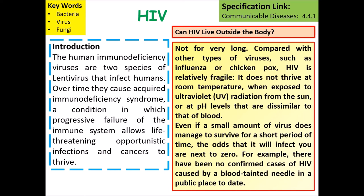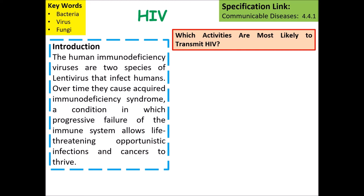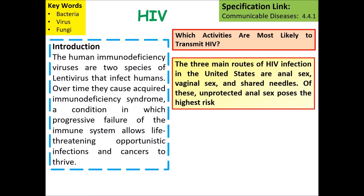Can HIV live outside the body? Not for very long. Compared with other types of viruses, HIV is relatively fragile and can be broken down by exposure to ultraviolet radiation from the sun, changes in pH levels, and an entire range of different things. Which activities are most likely to transmit HIV? The three main routes of HIV infection are anal sex, vaginal sex, or sharing needles when taking drugs. Unprotected anal sex poses the highest risk.